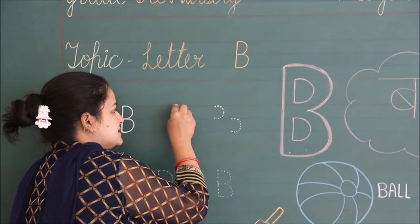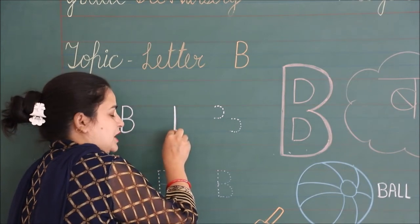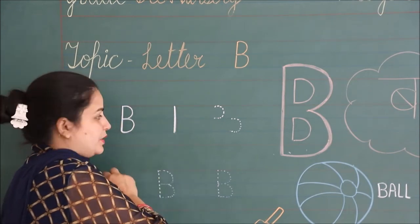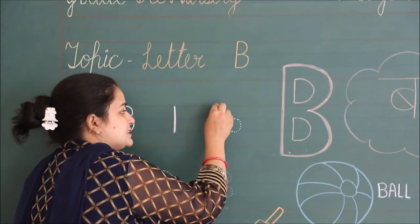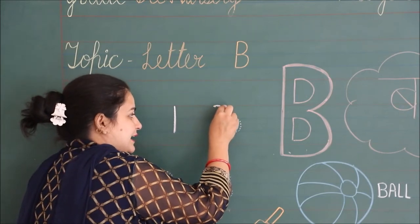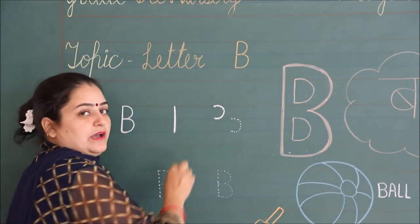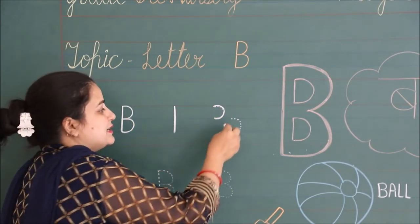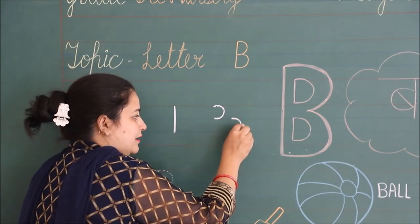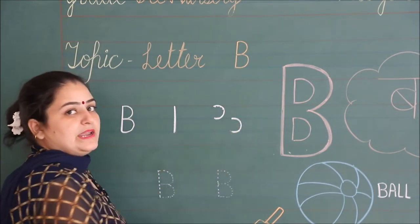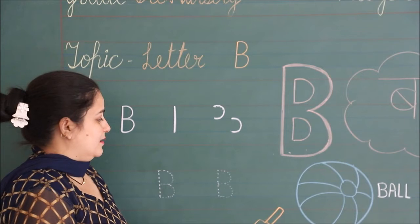Firstly, make a standing line. Then from the first line to the second line, make a curve. And from the second line to the third line, make another curve. ये दोनों आपको अलग-अलग सिखाया।